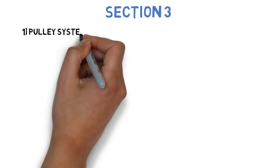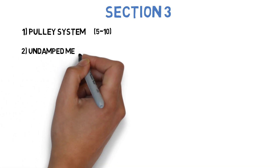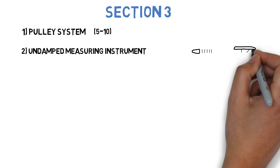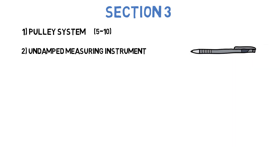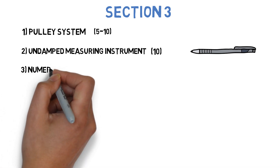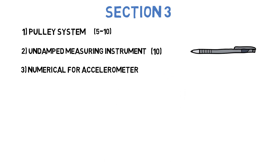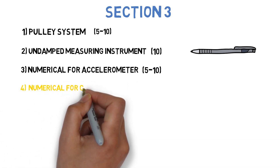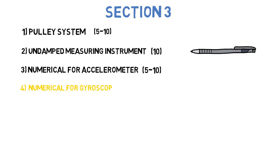In section 3, the first question is: find the natural frequency of the pulley system shown in the figure, neglecting friction and masses of the pulleys — a particular figure will be given. This can come for 5 to 10 marks. Next: prove that an undamped measuring instrument will show a true response for the given frequency ratio — this can come for 10 marks. Next: write the numerical for accelerometer, undamped and damped, or free damped single degree of freedom vibration system — 5 to 10 marks. Next: write the numerical for gyroscope pitching or gyroscopic couple; discuss the effects of damping on vibratory systems — 5 to 10 marks.